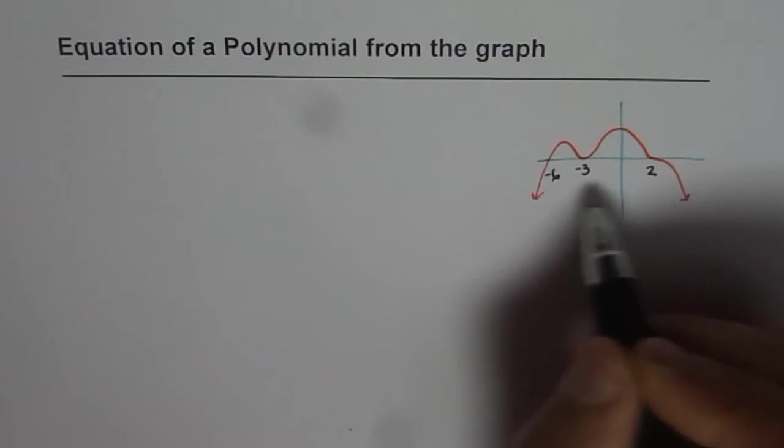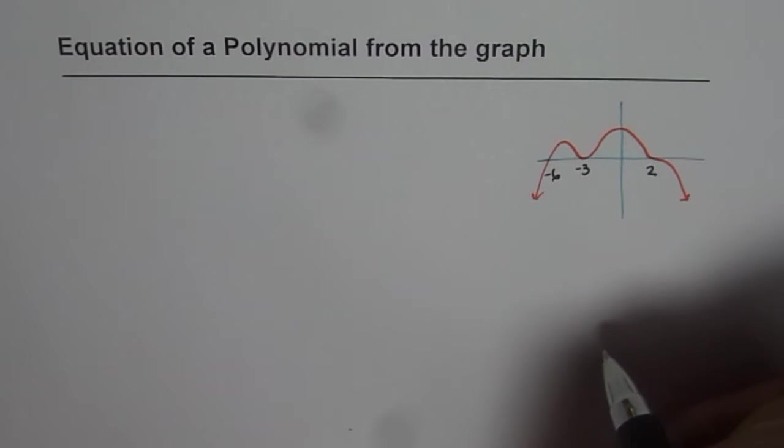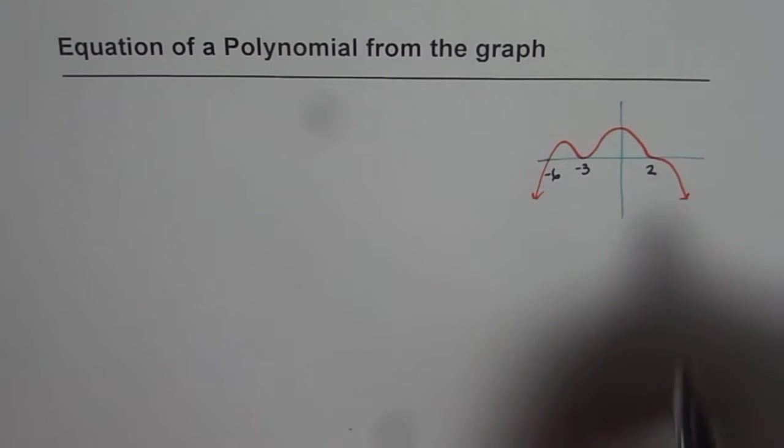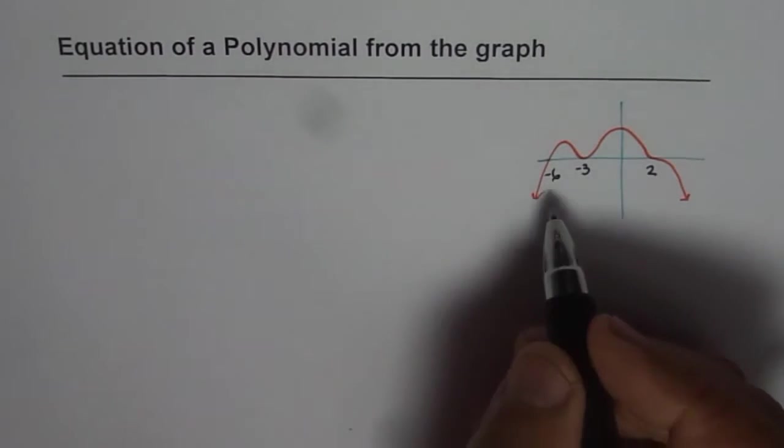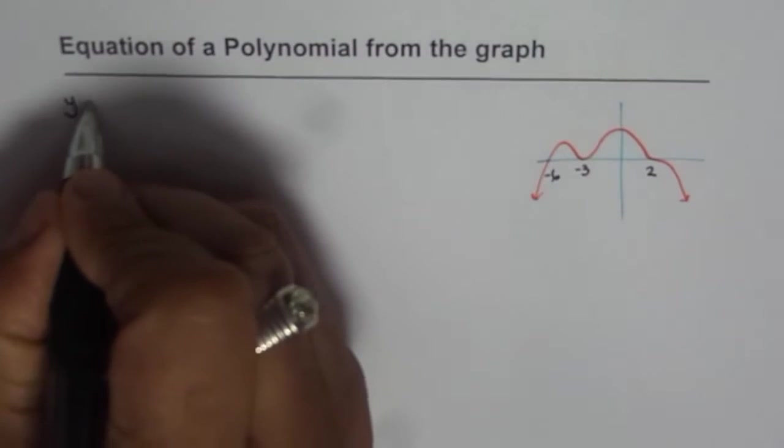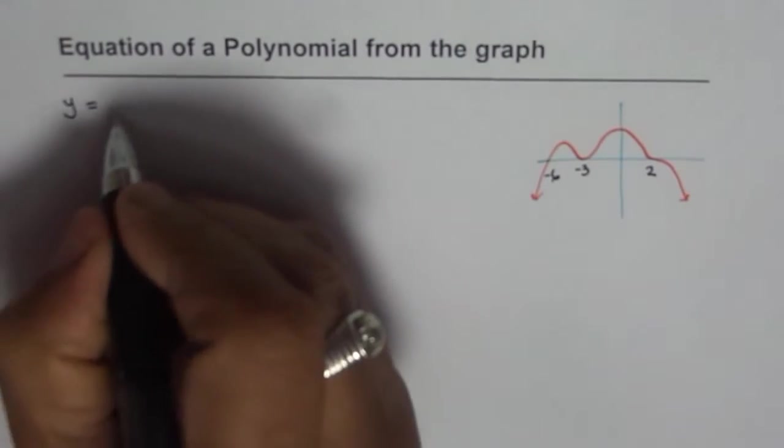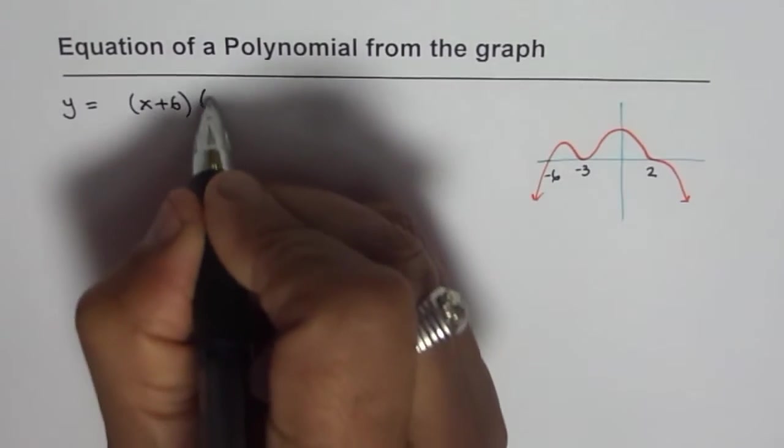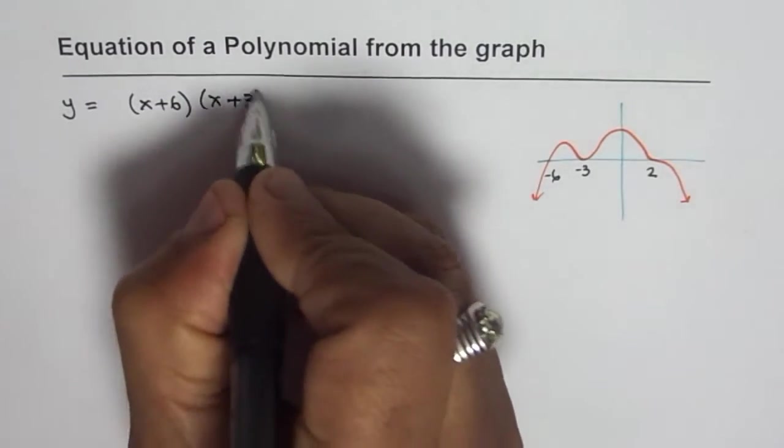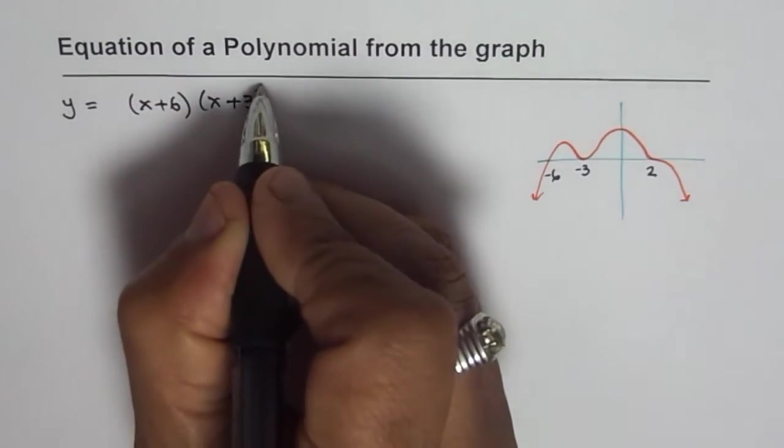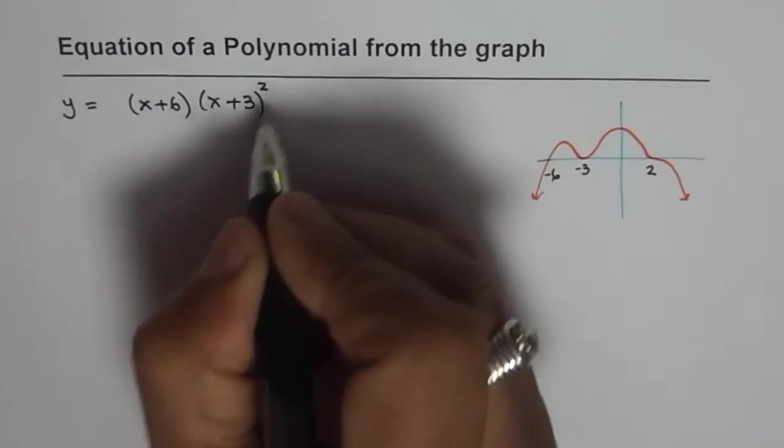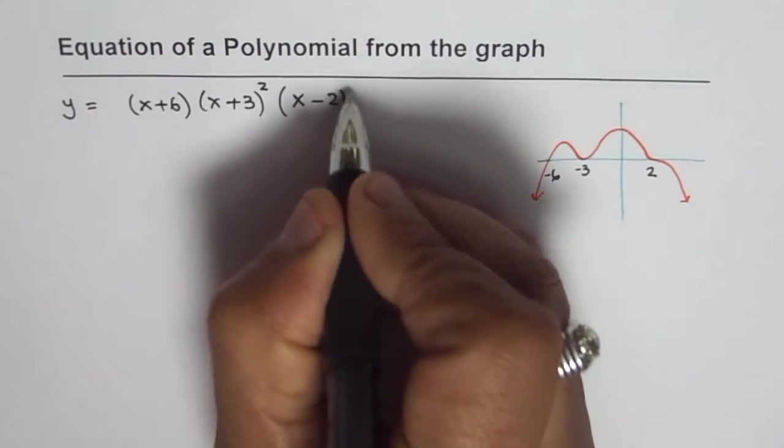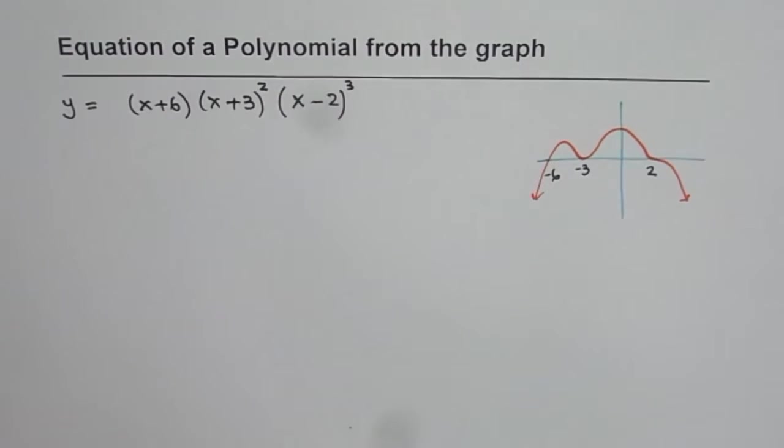In that case what is going to be the equation of this polynomial? Now since we know the three zeros we can write down the equation as y equals, starting from left, x plus 6 times x plus 3. Now this is quadratic so multiplicity is 2. And the next one is x minus 2 and we are saying it is cubic.